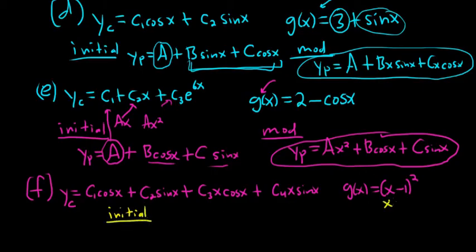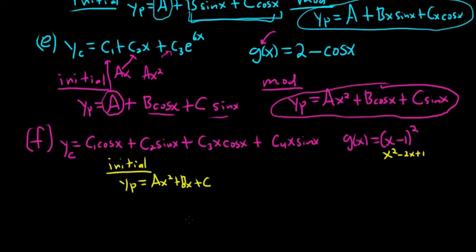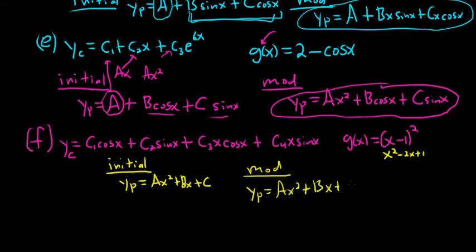You can think of (x minus 1) squared as x squared minus 2x plus 1. So your initial guess is just a quadratic: ax squared plus bx plus c. If you look at the quadratic and then look at the terms of Yc, there's no conflict — no repetition at all. So the modified is exactly the same: ax squared plus bx plus c.